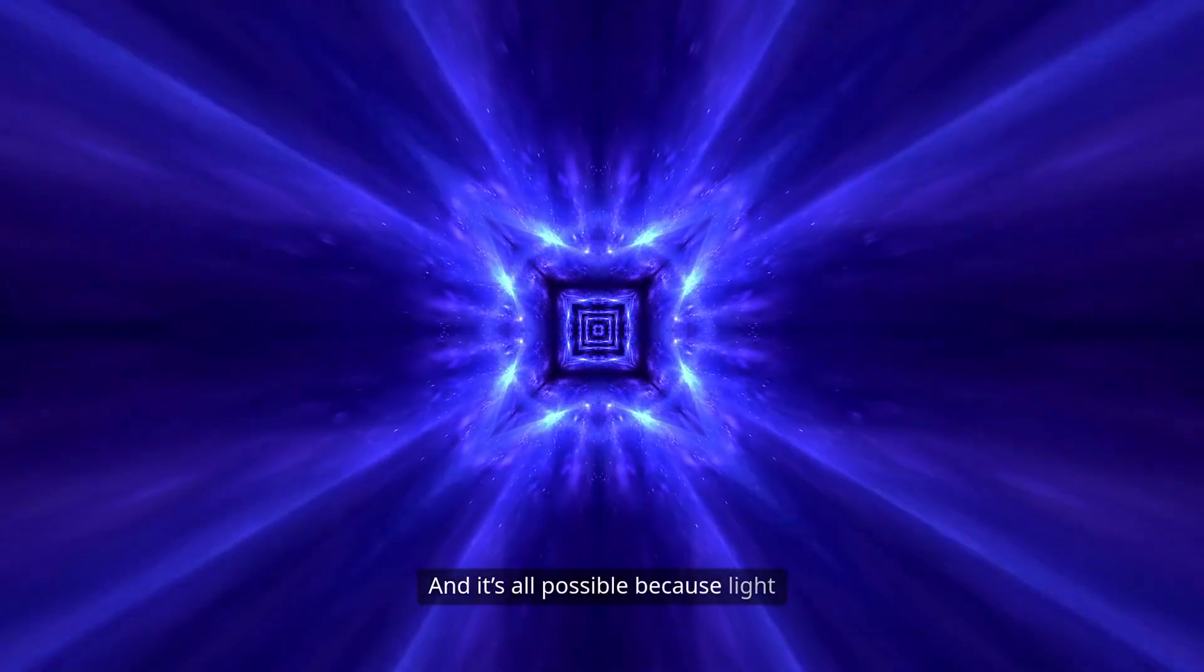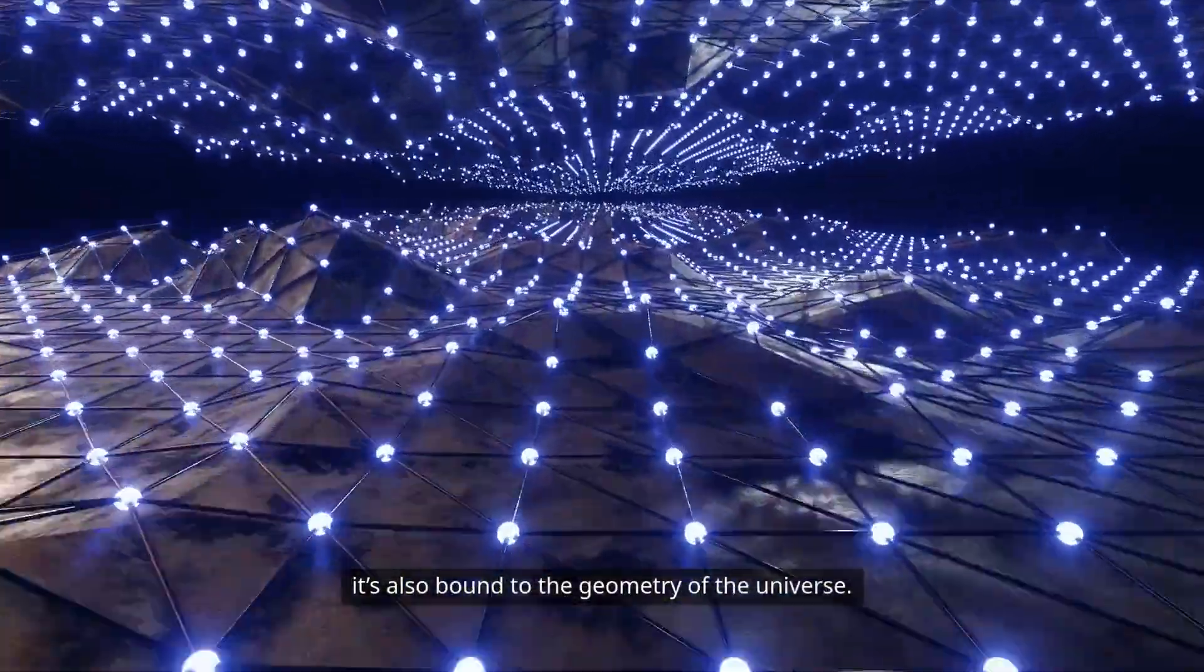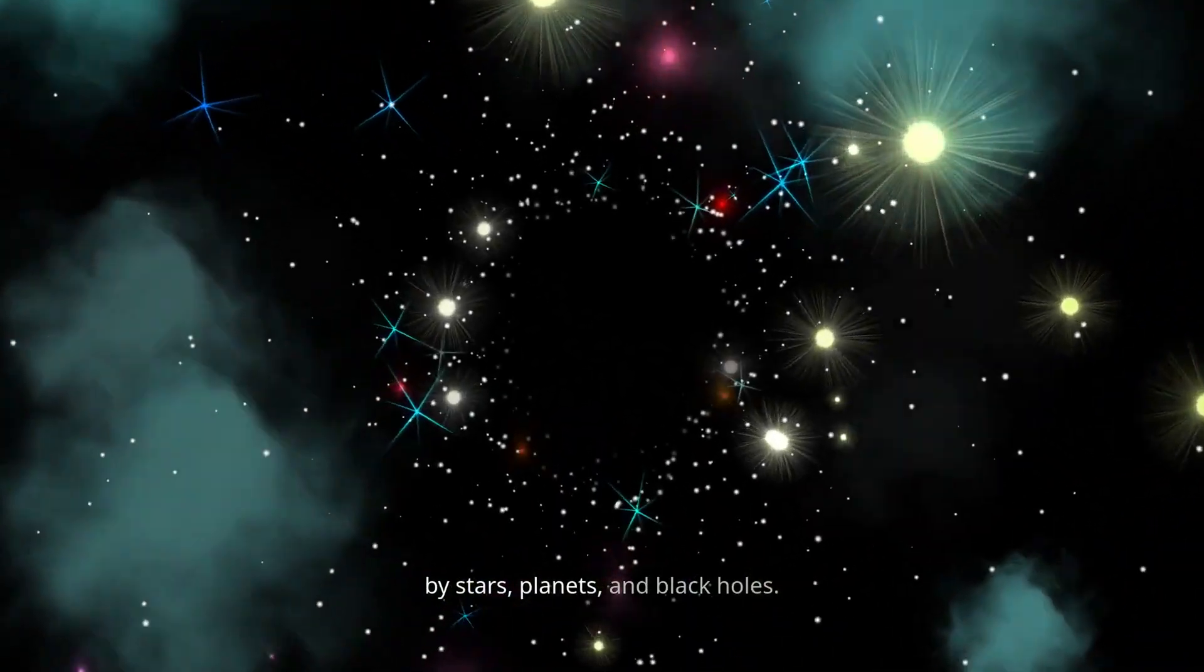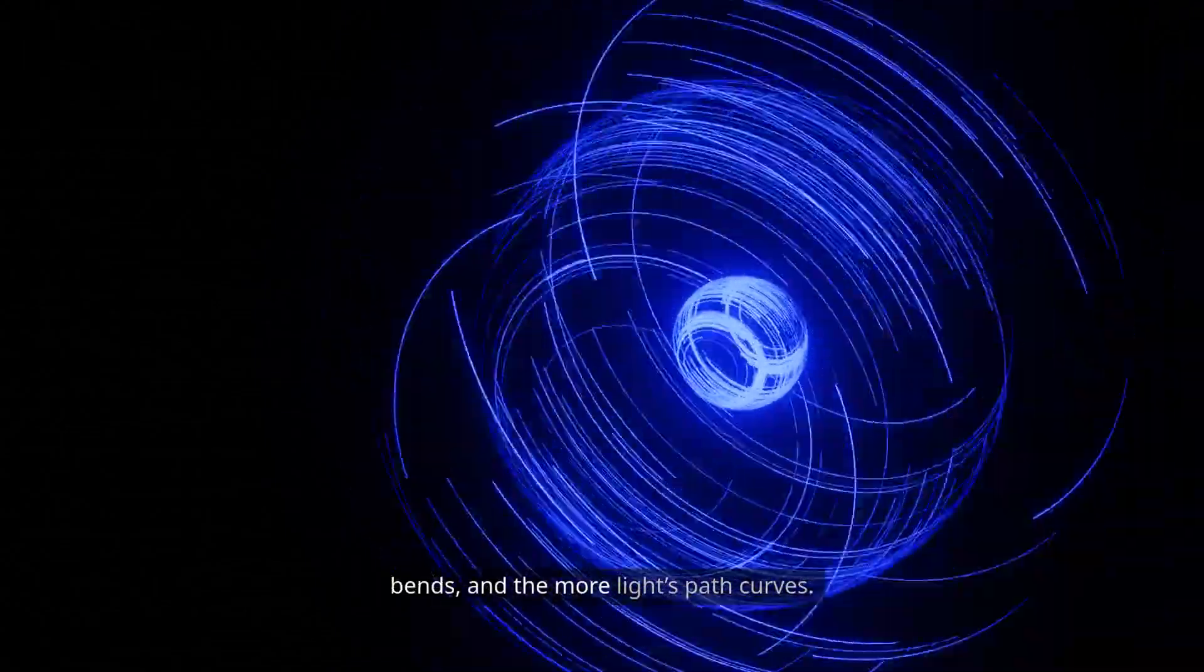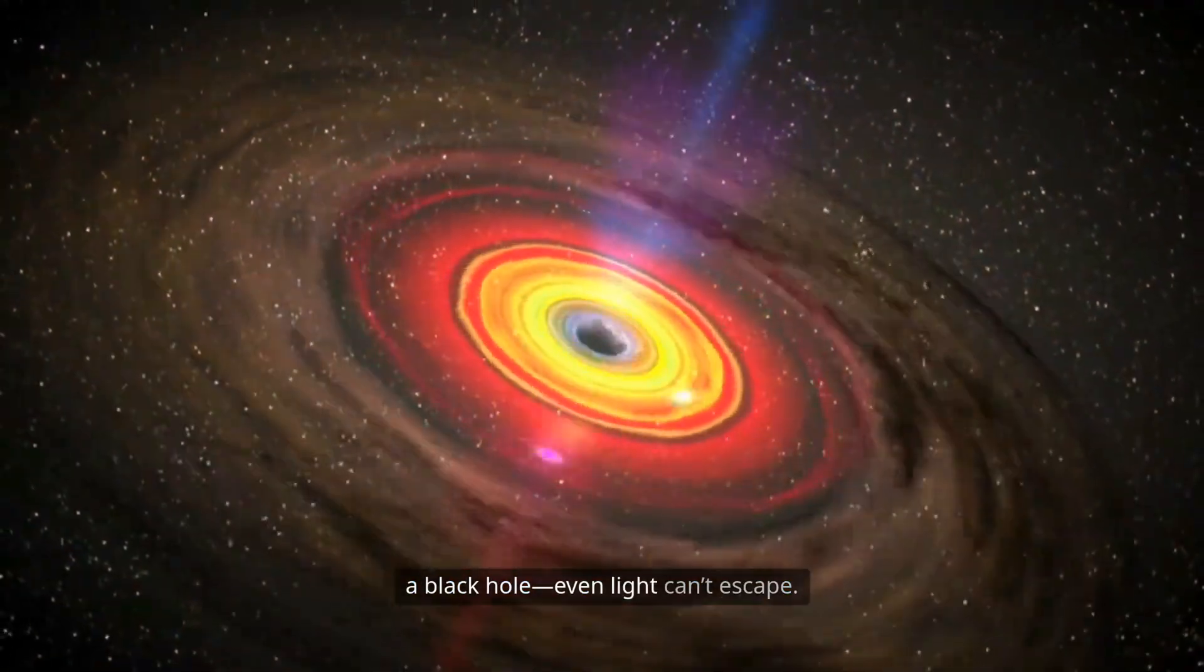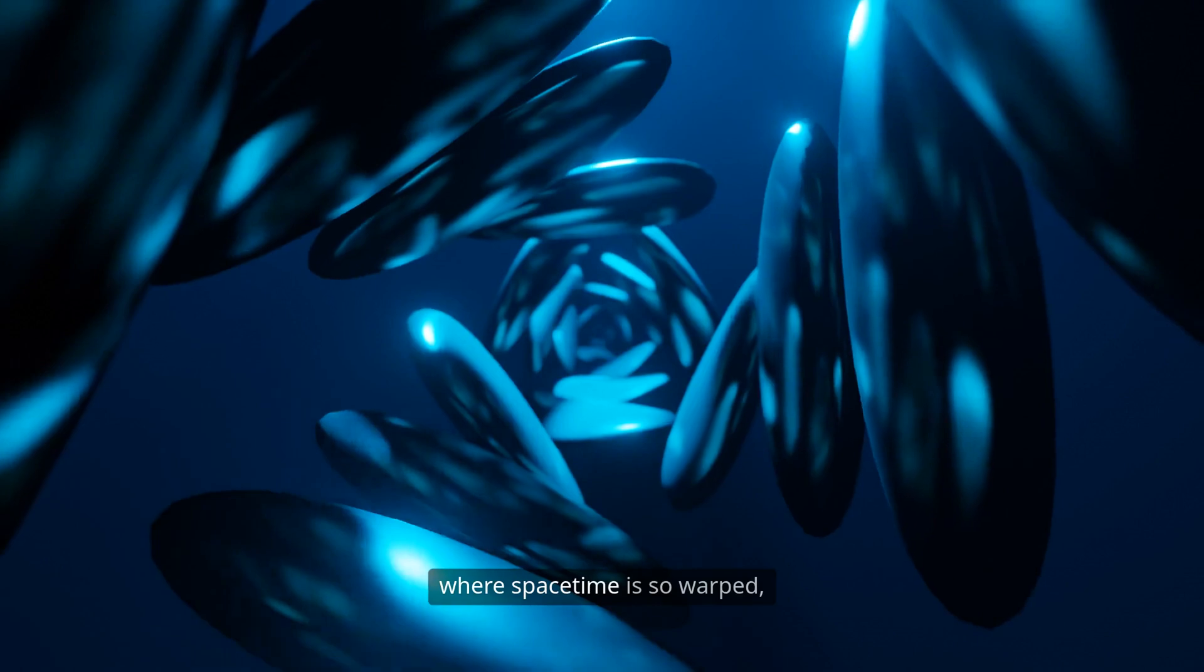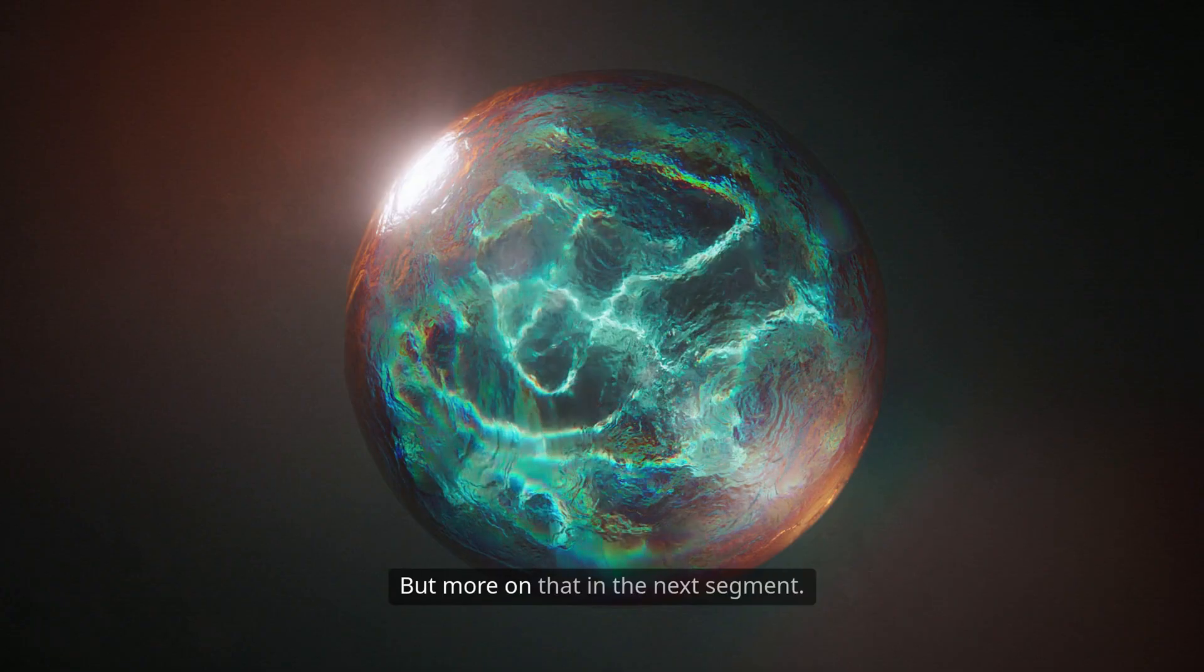And it's all possible because light follows the structure of space-time like a train on invisible tracks. So not only is light bound to a specific speed, it's also bound to the geometry of the universe. It moves along the curves and warps created by stars, planets, and black holes. The more massive the object, the more space-time bends and the more light's path curves. And if an object is massive enough, like a black hole, even light can't escape. That's the ultimate boundary. A region called the event horizon, where space-time is so warped, every possible path leads inward. But more on that in the next segment.